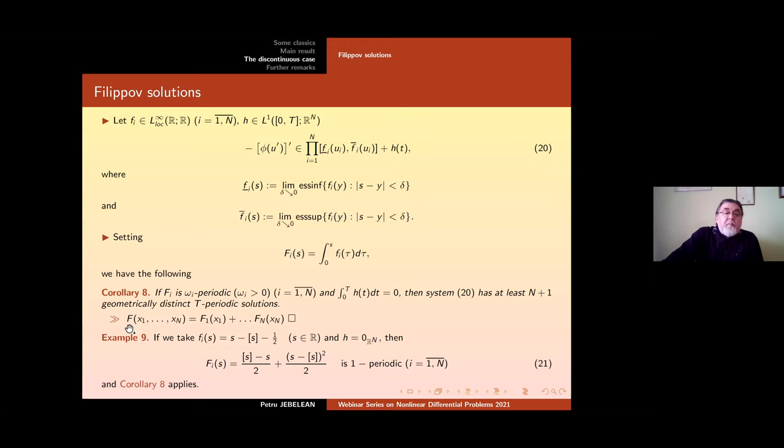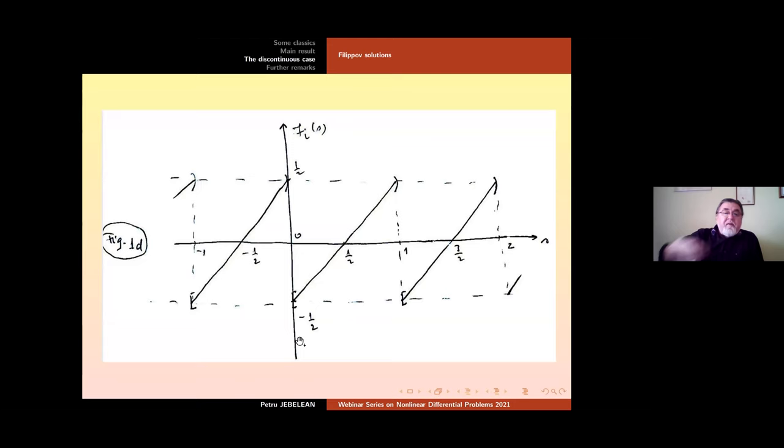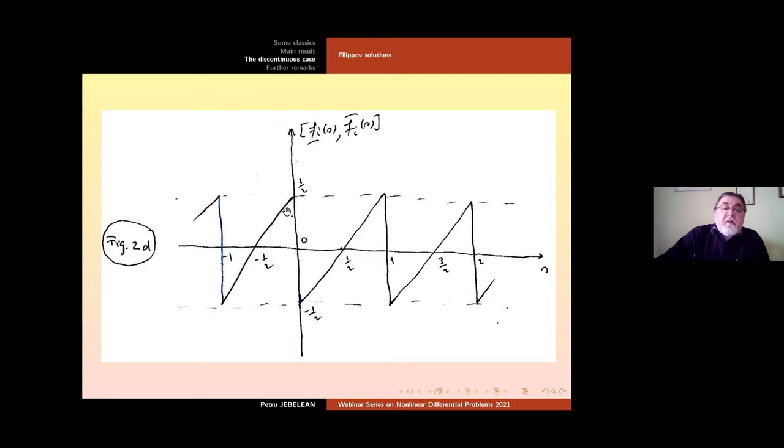As an example I take here φ(s) = s - [s] - 1/2, H I took to be zero. In this situation φ is given by this formula and this is one periodic and Corollary 8 applies here. I draw first this pulsing function φ. You see these are jumping at each integer and these are the multi-valued function φ underlined, φ overlined. This is the multi-function and also this is the primitive, the graph of the primitive.